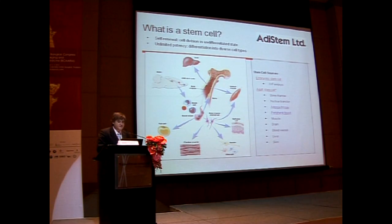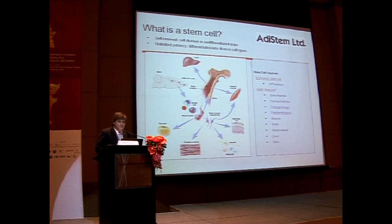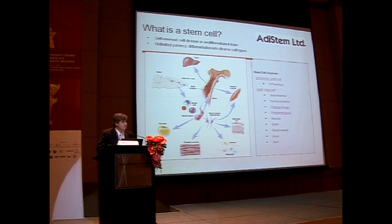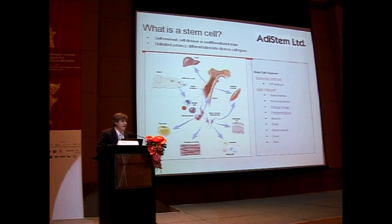Our interest of course is adult stem cells, because they have been used for quite a long time. Adult stem cells are divided into two types at the moment: hematopoietic-derived stem cells and mesenchymal stem cells. Hematopoietic stem cells drive a hematopoietic-type division in our blood and white blood cells, and mesenchymal stem cells are our tissue stem cells or progenitor cells.